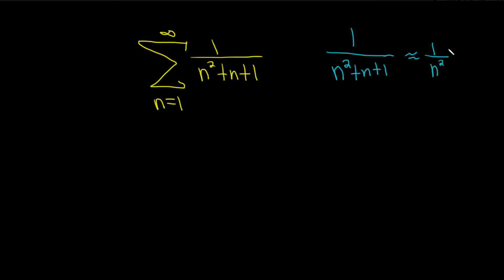And we know something about the sum of the terms 1 over n squared. This is a convergent p-series because p is equal to 2, which is bigger than 1.